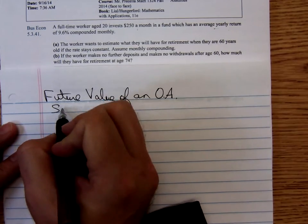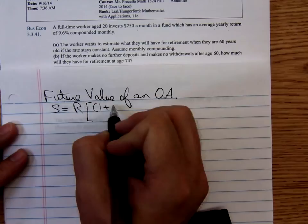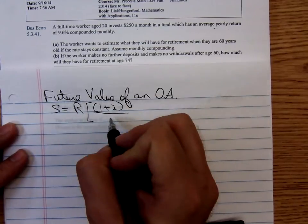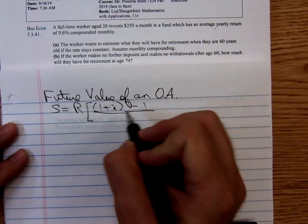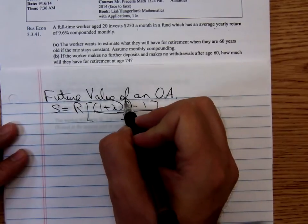S equals R times (1 + i)^n minus 1, all divided by i.